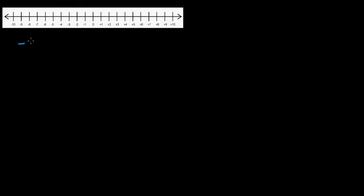So negative four plus one — what does this mean? You are adding one to negative four. When you're adding numbers, you are going to the right. I'll show you how you can do this on the number line so you can visually see what's happening. This is your starting point at negative four, and if you go one to the right, you reach negative three. So the answer is negative three.